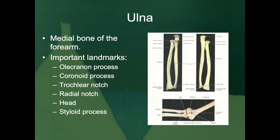The radial notch is a depression located laterally and inferiorly to the trochlear notch; it receives the head of the radius. The distal end of the ulna consists of a head separated from the wrist by a fibrocartilaginous disc. There is also a styloid process at the posterior side of the distal end. These features tell us how the bone interacts with both the humerus and the radius, and architecturally they reveal the design of the wrist and the elbow hinge joint.